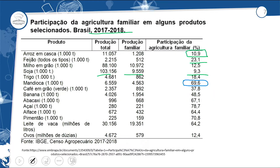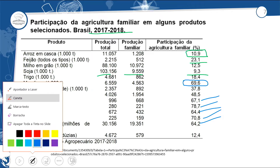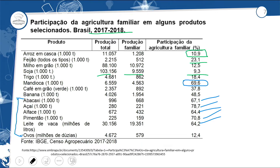Destacando outros produtos com grande participação da agricultura familiar: abacaxi, 67%; açaí, 78%; alface, 64%; pimentão, 70,8%; leite, 64%. A participação é bem alta. Os produtos com menor participação da agricultura familiar — como a soja, com 9,3%, sendo os outros quase 90% para exportação — provavelmente têm caráter exportador. Já produtos com alta participação familiar são mais voltados ao mercado interno.